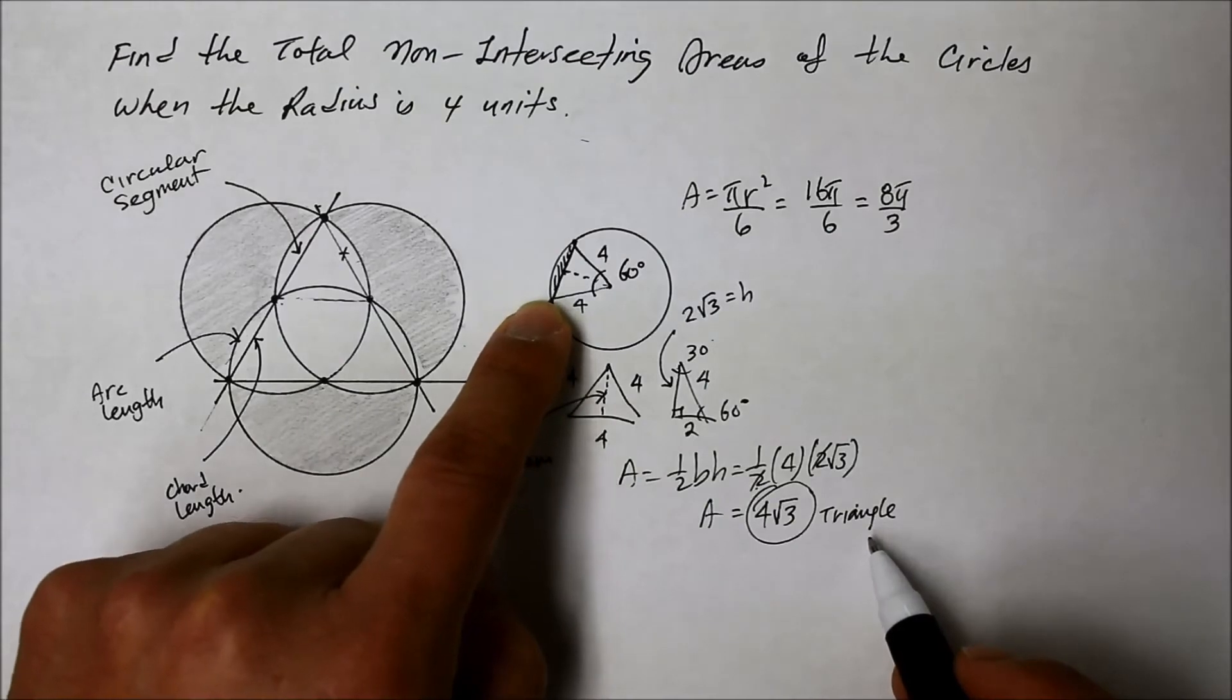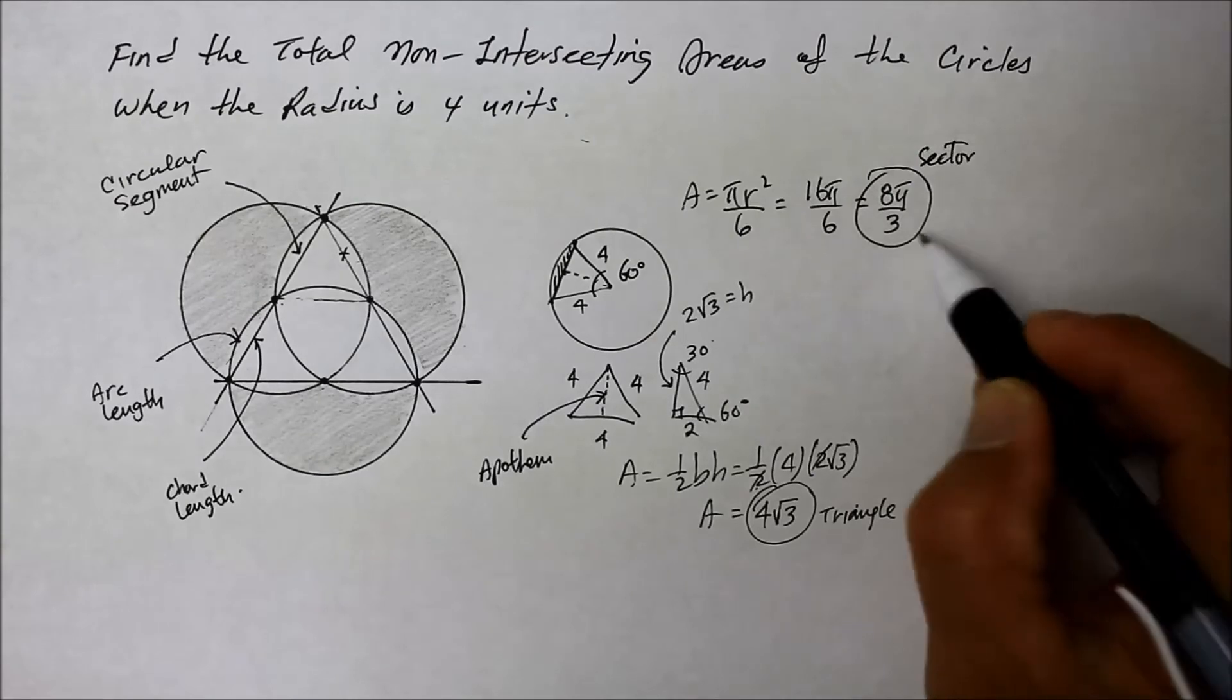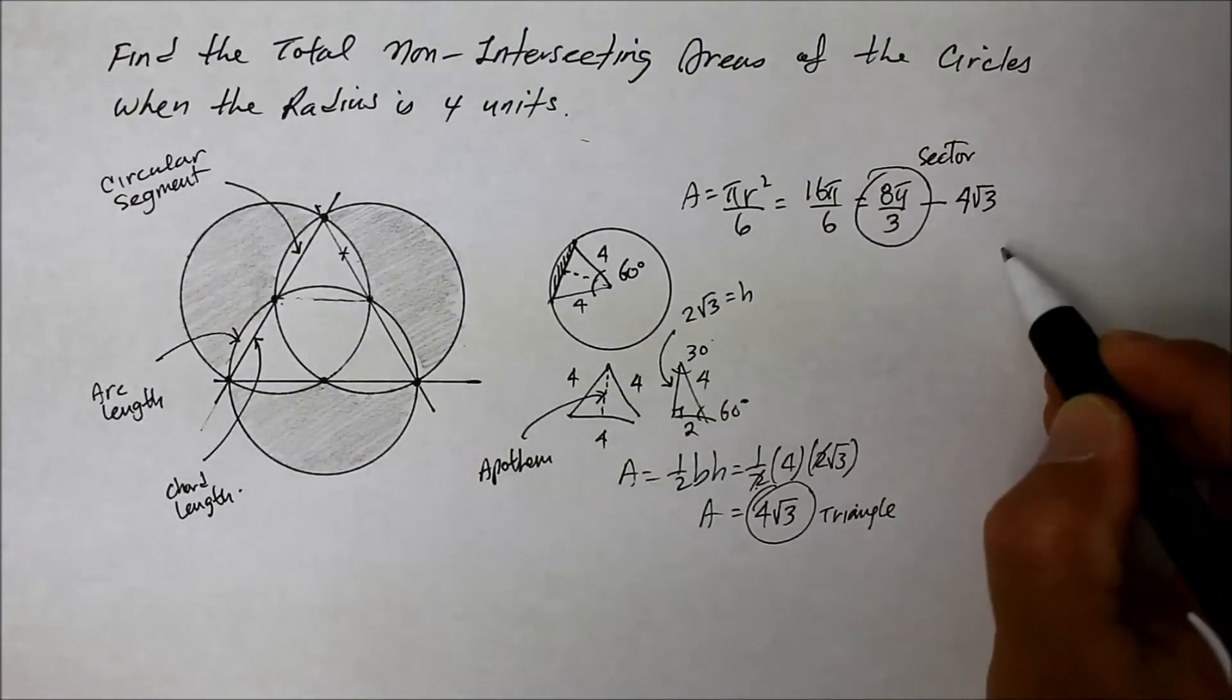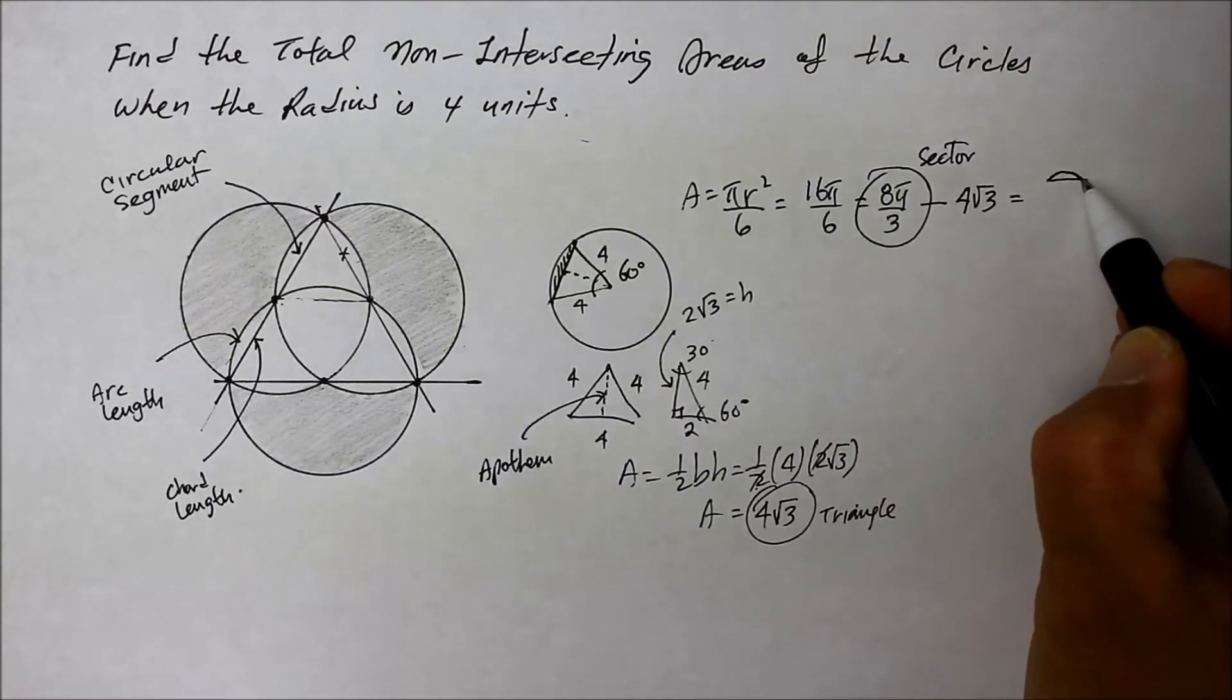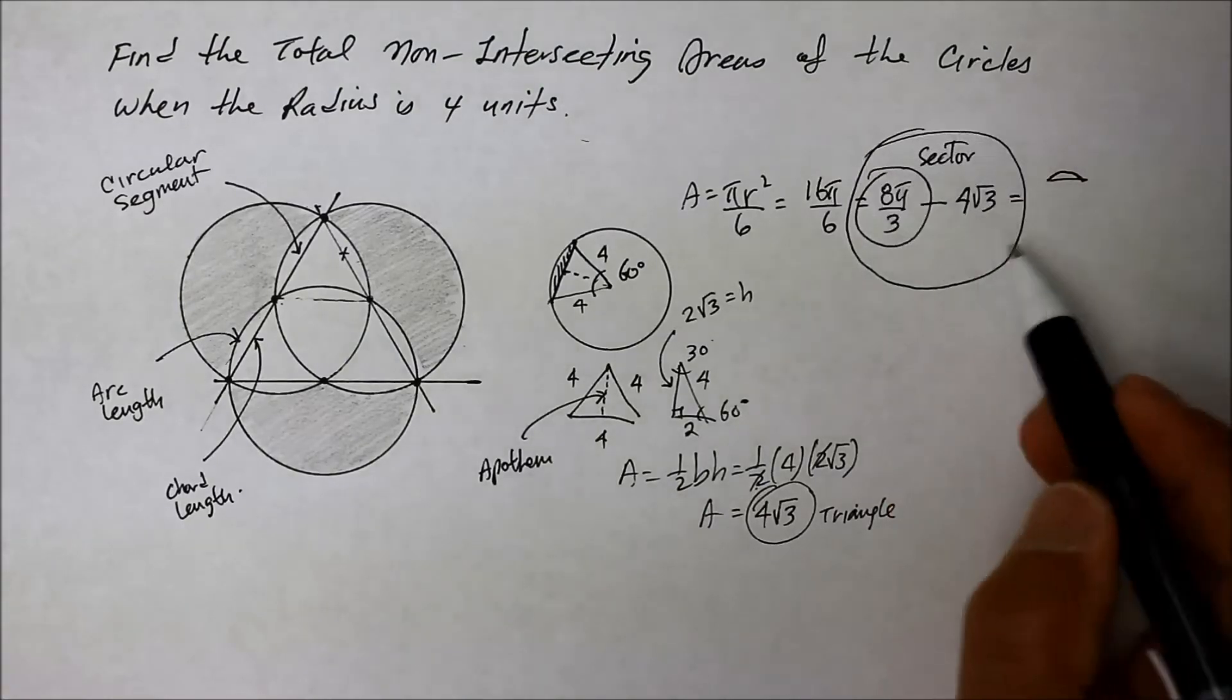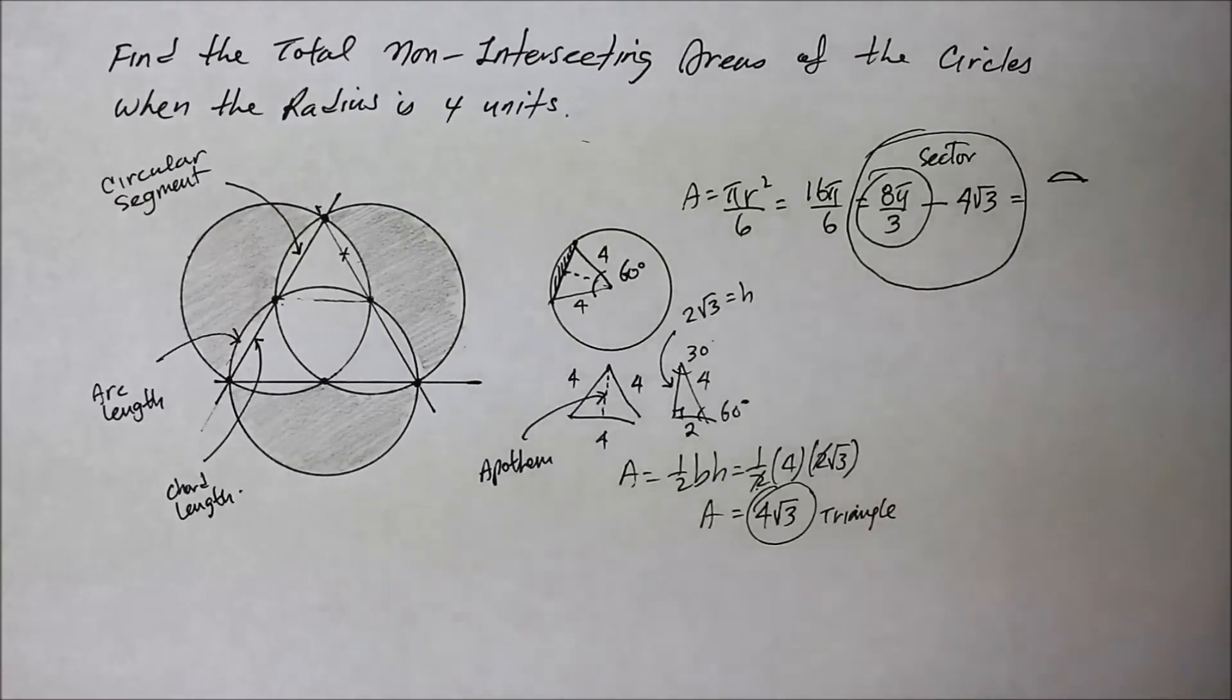So what we want to do is take the area of the sector minus the area of the triangle. And what you're going to end up is that little circular segment. But rather than evaluating it yet, let's just take that. Excuse me, that's my text.